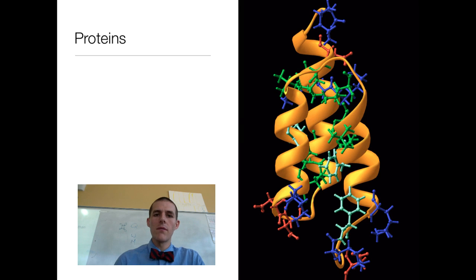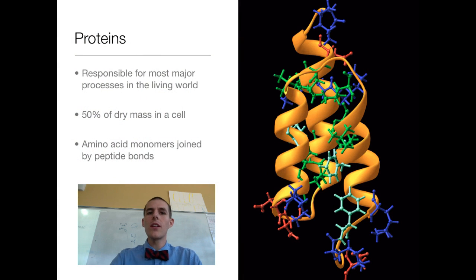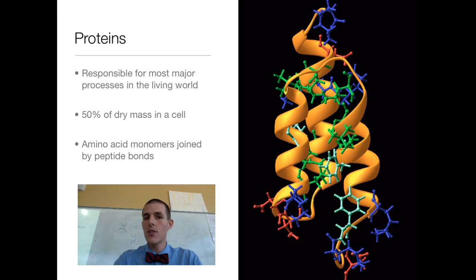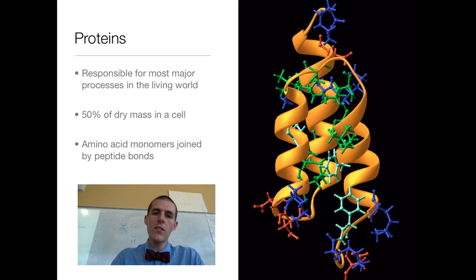So first of all, let's talk about what proteins are. In the living world, I don't think there is any more important molecule. You could argue DNA is, because DNA is the instructions for proteins. But when it comes to getting anything done, it is proteins that do the work. They are 50% of the dry mass in a cell, and their monomer — we've talked about monomers all the way through this series — are building blocks called amino acids, joined together by peptide bonds.